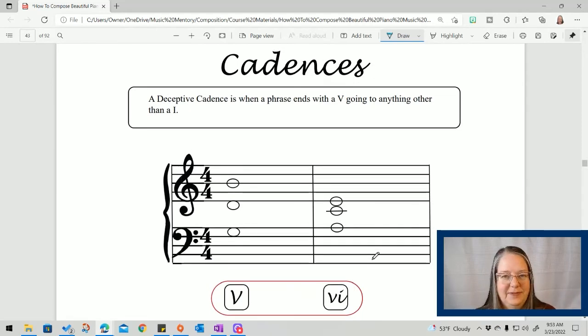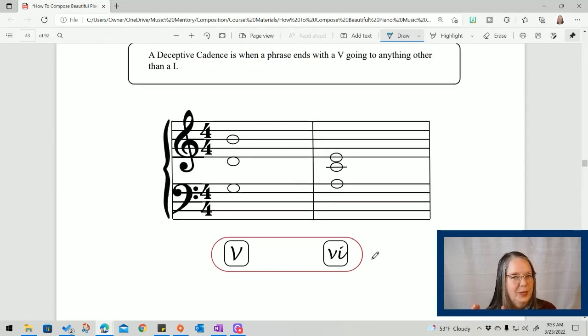This is a deceptive cadence. All right, it's the bait and switch. Remember, like a perfect authentic cadence goes from a five to a one. A five just has that pull and it wants to draw you so much back to the one chord to home. And this is where a five has that pull to home and it switches and it goes somewhere else. It can be really useful when that's the point that you want to make. You want to make people sound like, oh, it's going to resolve and then it doesn't and it goes somewhere else.